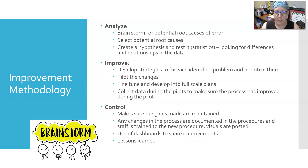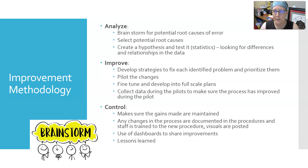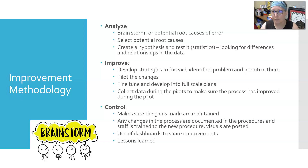In the Improve phase, once you've selected potential root causes, you develop strategies to fix each identified problem but prioritize them — you don't want to fix everything at once because then you don't know what worked. You prioritize what to fix first and roll them in a time sequence. You want to pilot the changes at a small scale to see if the solution actually works. Then analyze the pilot, fine-tune it, and develop the program into a full-scale plan. Collect data during the pilots to make sure the process is improving, because if it's not, maybe you selected the wrong solution.